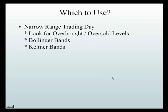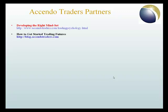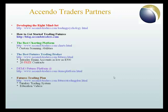In closing: which one should you use? On narrow range trading days, look for overbought and oversold levels using Bollinger Bands and Keltner Channels. On breakout trading days, find your breakout signals using Momentum Bands developed by Dave Elliott, or the Price Action Channel two five simple moving averages developed by D. Malone. We've got a great five-part audio series on developing the right mindset, a charting platform, futures trading — 300 e-mini, 20 free contracts, turnkey trading plans, and live professional trading advice. Thanks, trade at your own risk, see you next time.